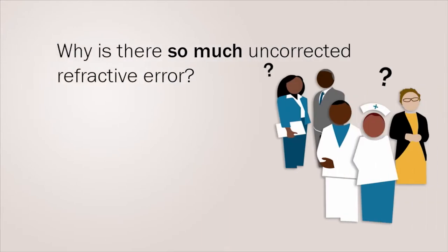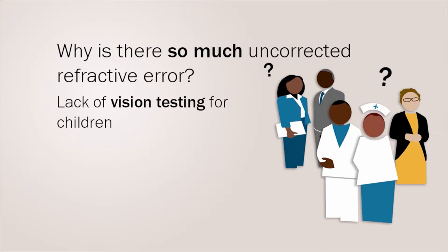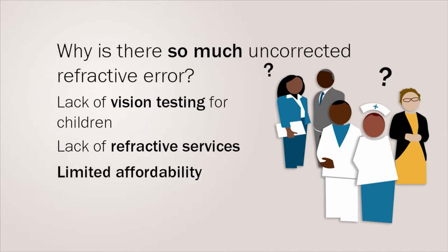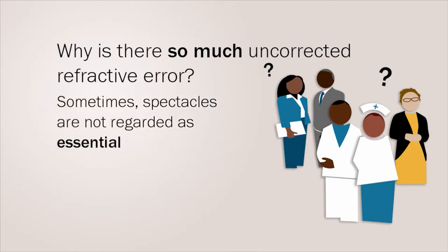Why is there so much uncorrected refractive error? Many settings lack vision testing for children to ensure early detection and management. There is a lack of refractive services and limited affordability of spectacle correction, particularly in rural communities. Sometimes spectacles are not regarded as an essential medical intervention. And lastly, there may be cultural disincentives, which means that people choose not to wear or accept correction, especially girls.